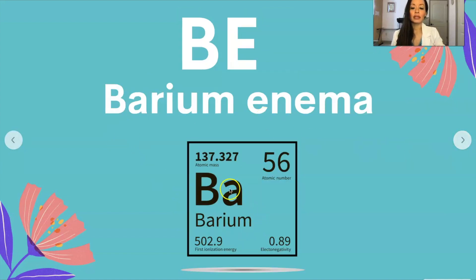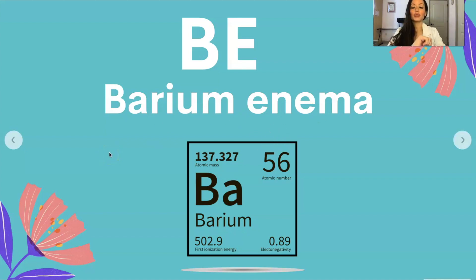BE stands for barium enema. Remember, barium is a chemical element on the periodic table. A barium enema goes up the other way, and it helps visualize via x-rays, imaging, or CT scans to see what's going on in your intestines.